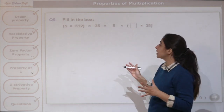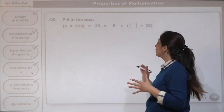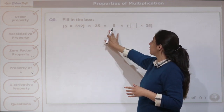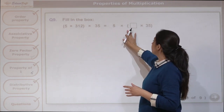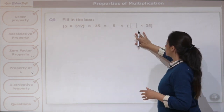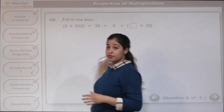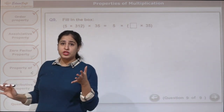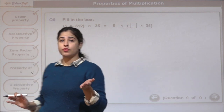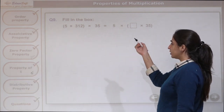Here, 5 times (312 times 35) gives us 5 times (box times 35). Which property are we making use of? It's not the order property — it's the associative property.